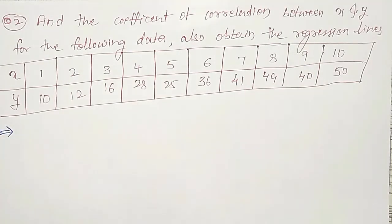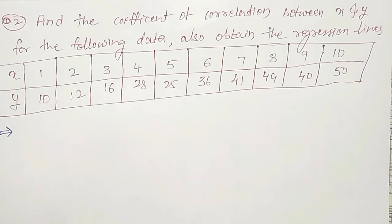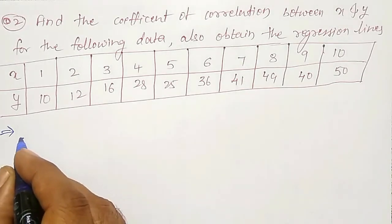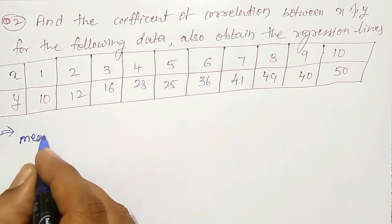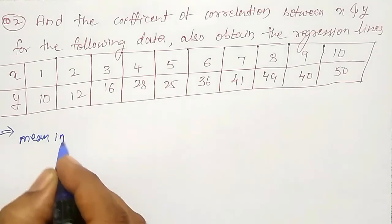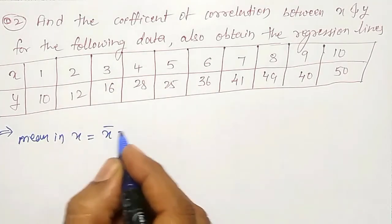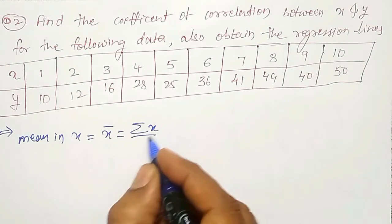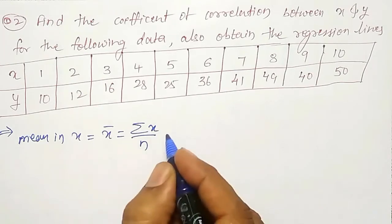To use the coefficient of correlation we have three formulas. Out of that, which one we are to use — that will be decided by our mean of x and mean of y. Mean of x, that is x-bar, is equal to summation of x divided by n.